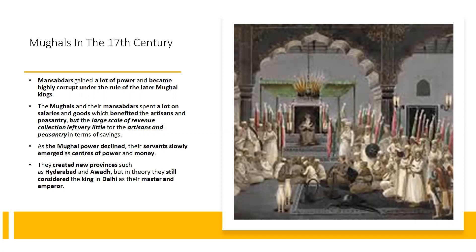But in theory, they still considered the king in Delhi as their master and emperor. This means that the decline of the Mughal Empire set in during the 17th century, but not in a formal way. The Mansabdars and Jagirdars became so corrupt that they carved off large provinces from the Mughal Empire and started governing them autonomously, while officially still recognizing the Mughal emperor as their master and king — because of the great prestige associated with being emperor, the sole king of the Indian subcontinent.